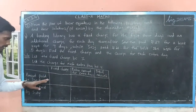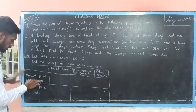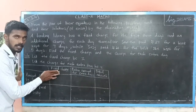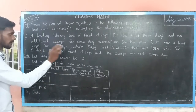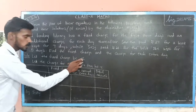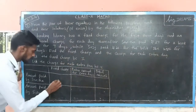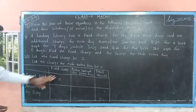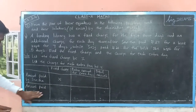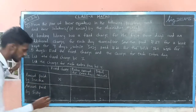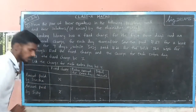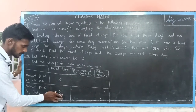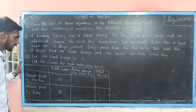Saritha has to pay a fixed charge for the first three days, so that is x. The fixed charge paid by Susie for the first three days will also be x. So the fixed charge is x in both scenarios.